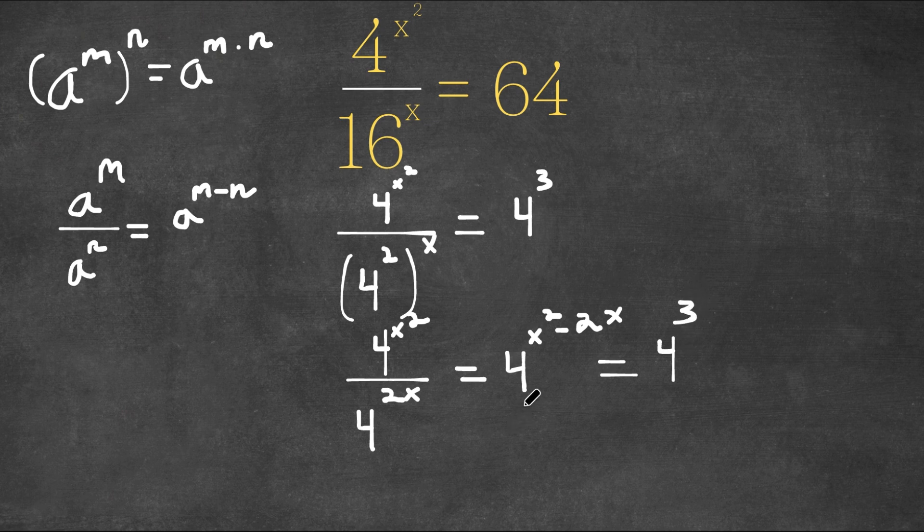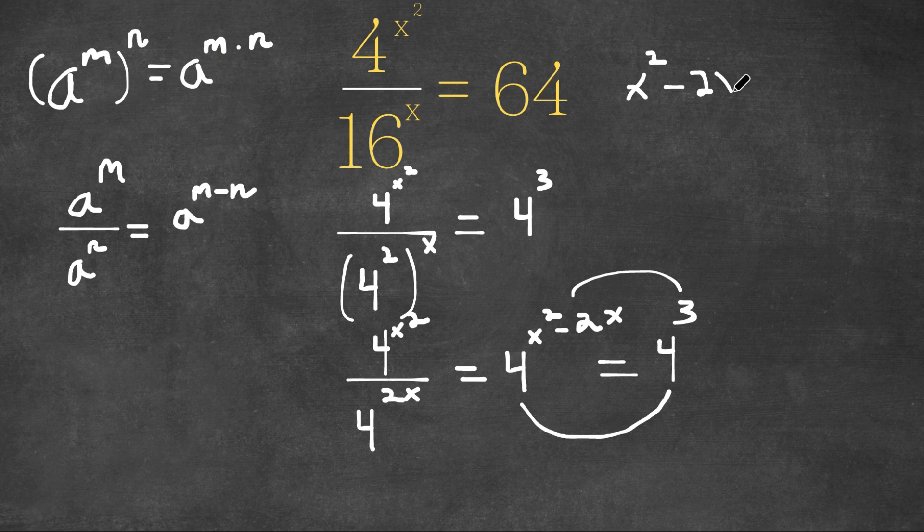Now, because these two terms have the same bases, then that also means that our exponents here, these two are the same as well. Meaning x squared minus 2x is equal to 3.